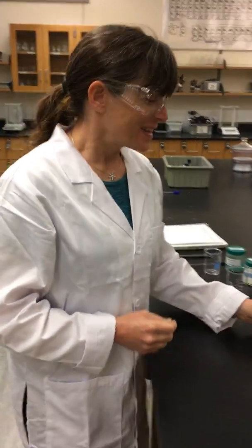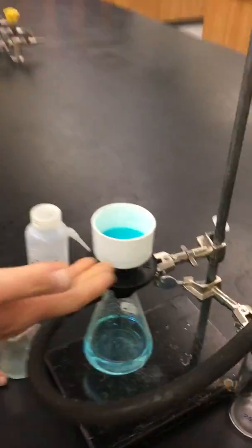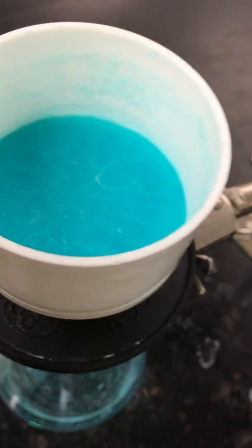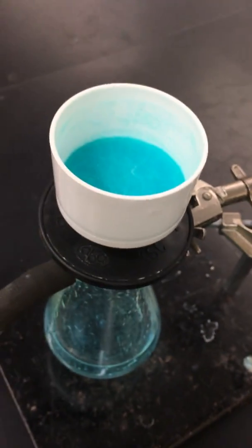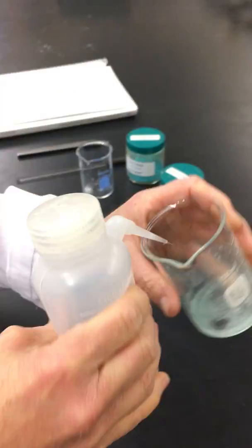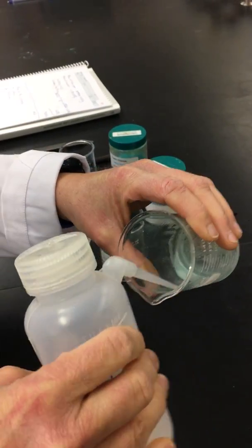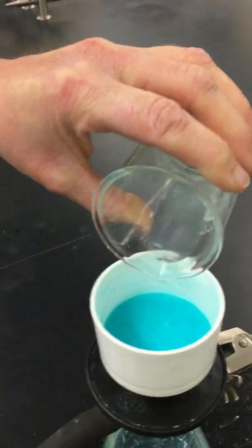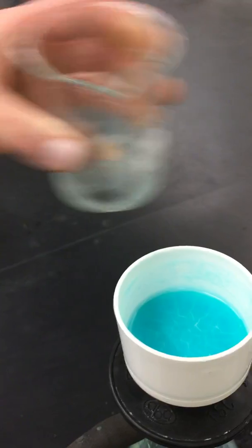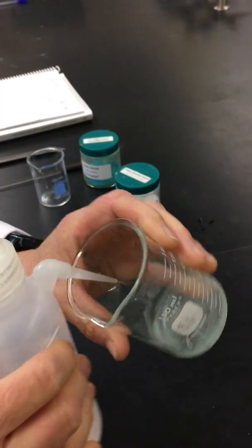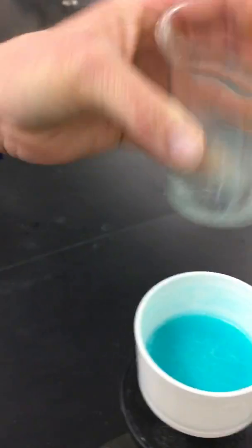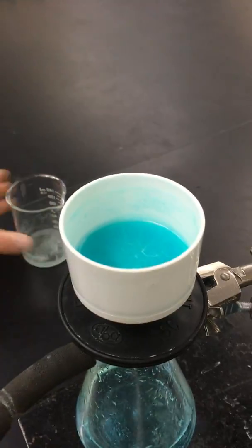And we're back. So if you look, you can see that has now filtered through. But now what we're going to do is we want to make sure that we've transferred all of our product to this, so that way, because we're quantitatively determining how much product we made, we want to make sure we're collecting all of it.